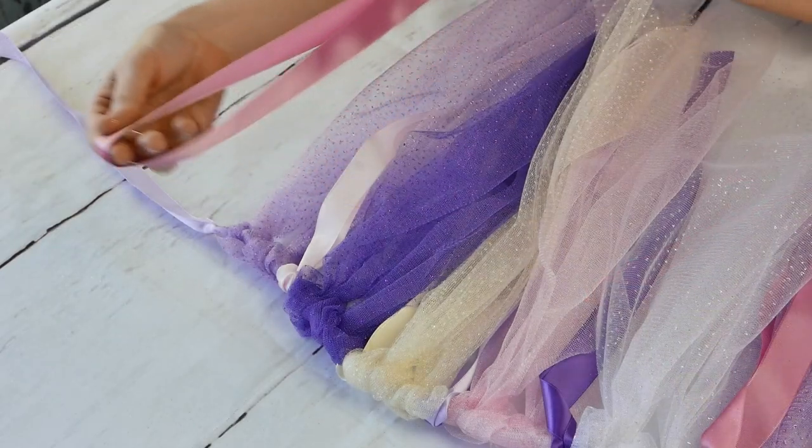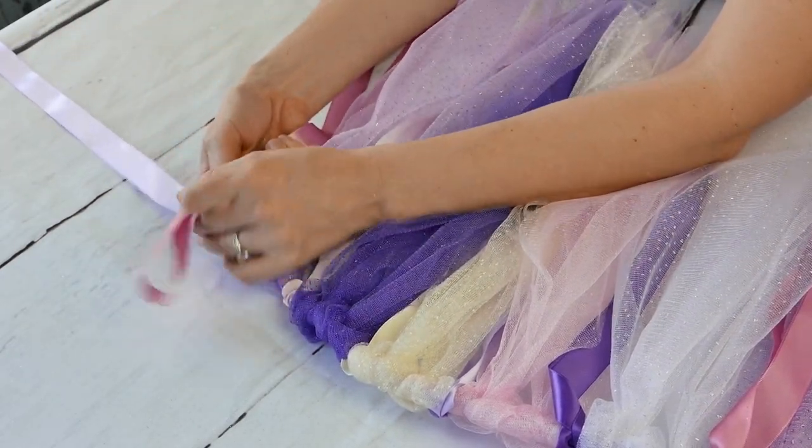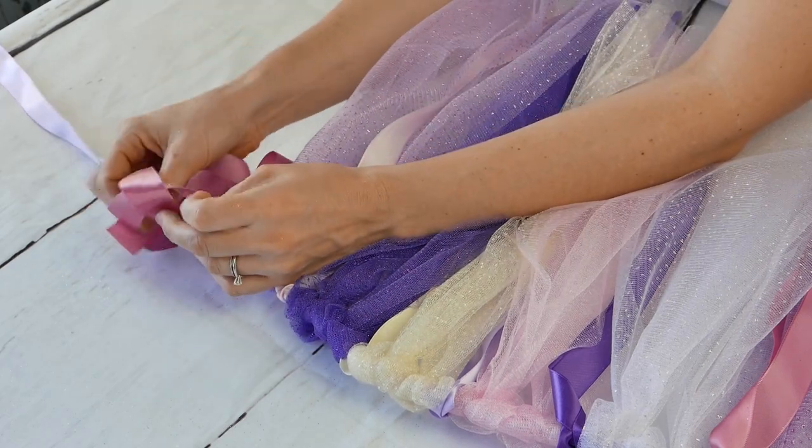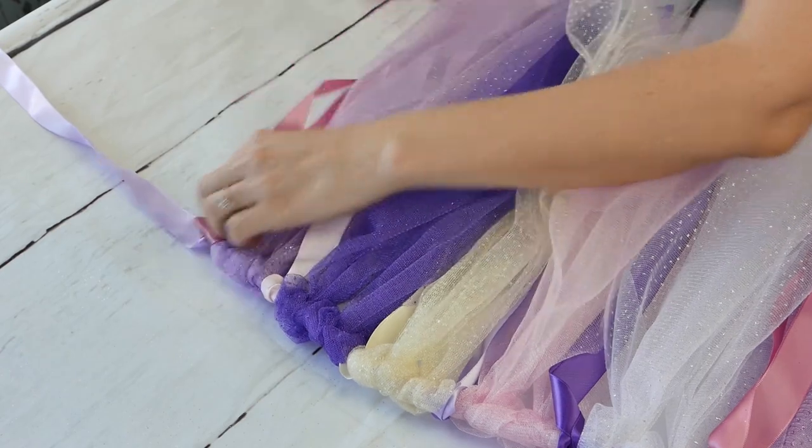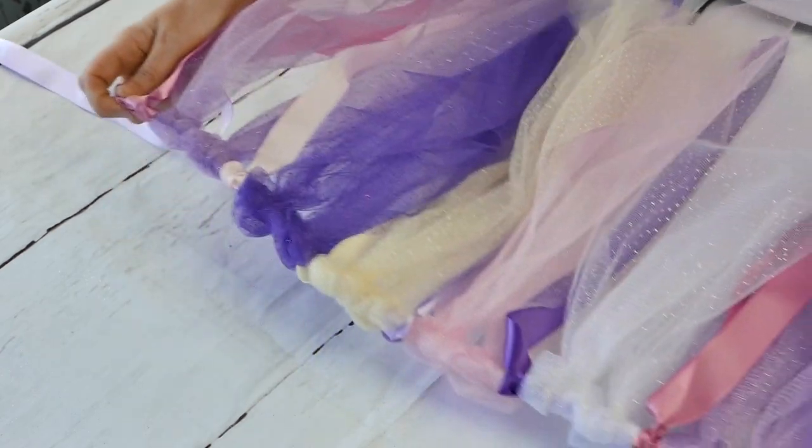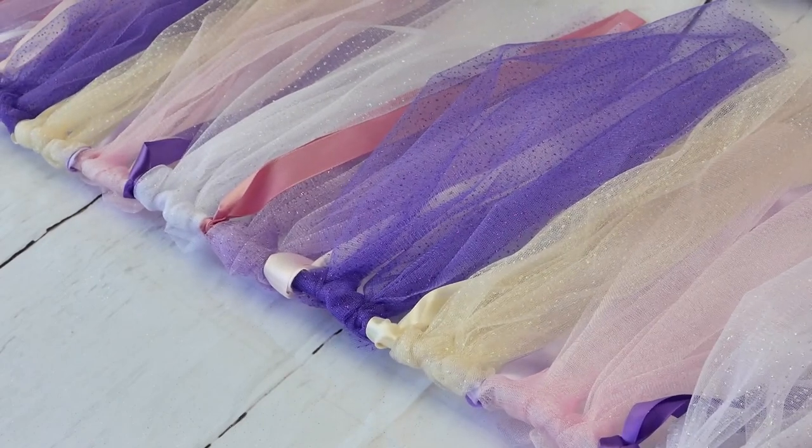Now we're also incorporating our other satin ribbons that are 7/8 inches and pulling them through. As you can see, the theme that we chose are multiple shades of pink and purples. And we have a little bit of ivory or a light baby yellow too. Obviously you can pick whatever color that you want.